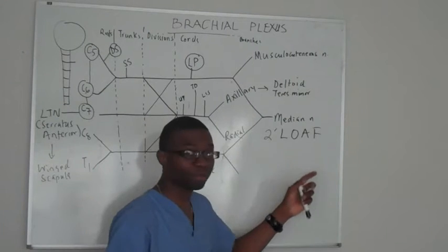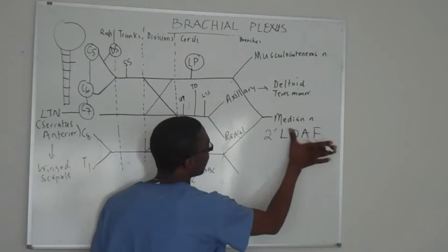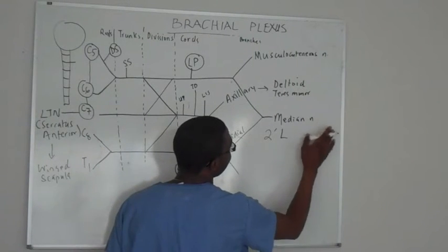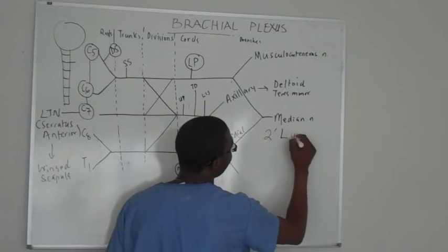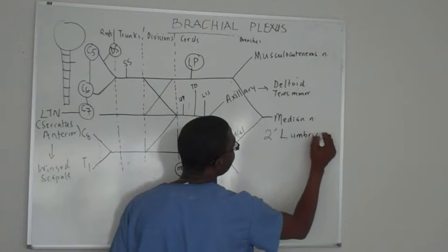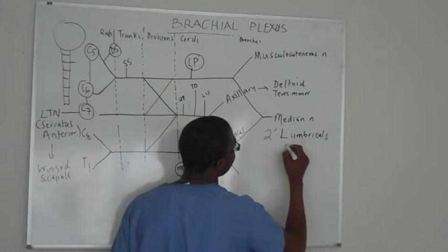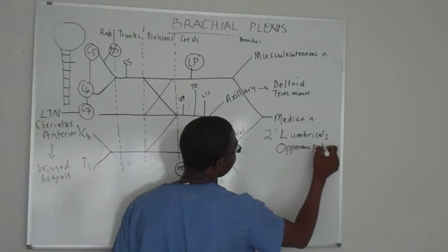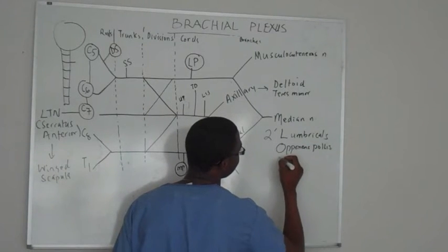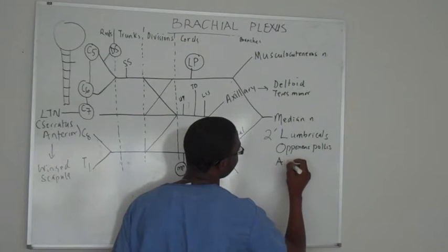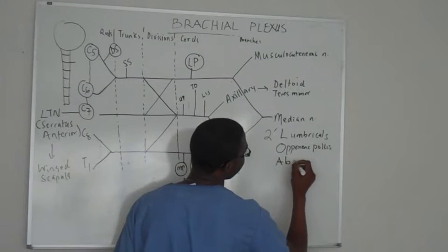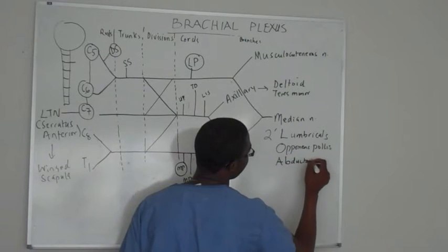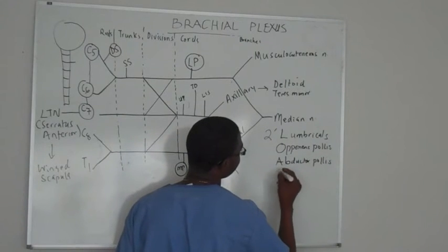Two loaves basically means the first two lumbricals. Opponents pollicis brevis. Abductor pollicis brevis.